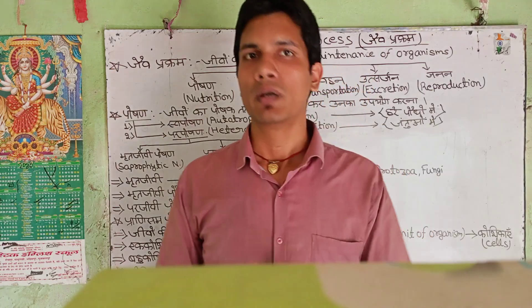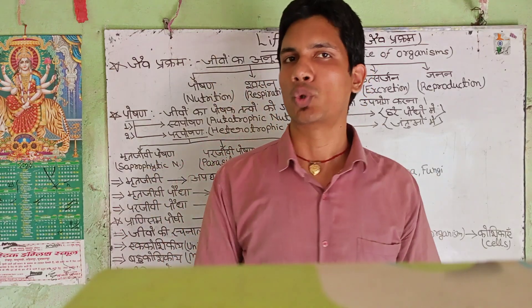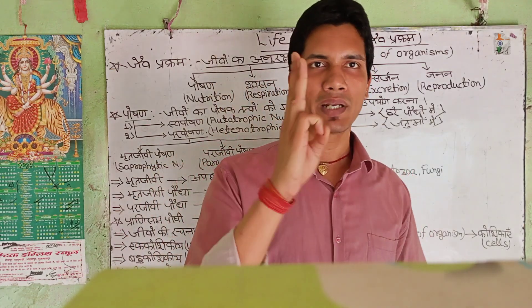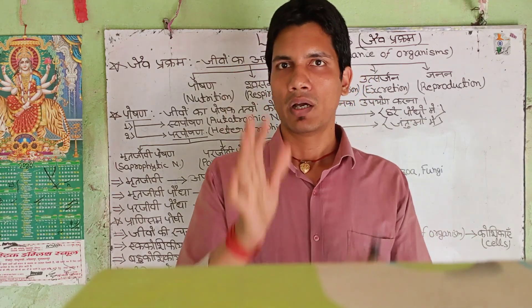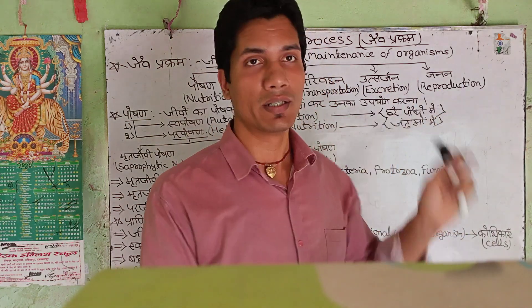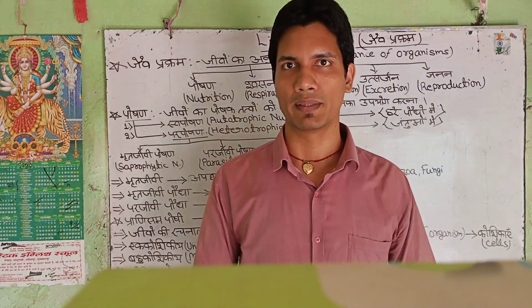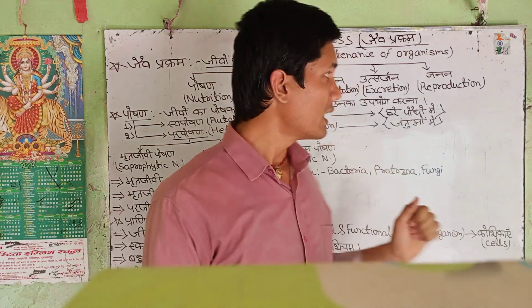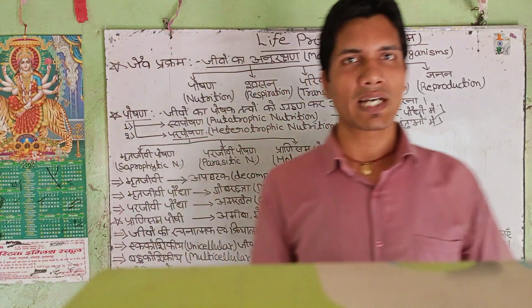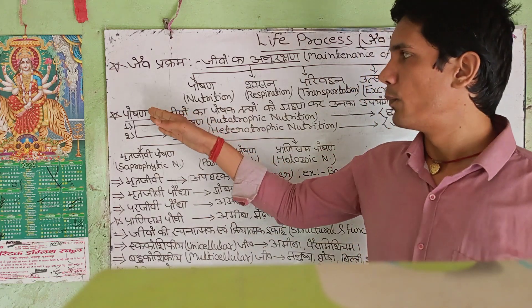The five life processes are: Number one, Poshan (Nutrition). Number two, Shwasan (Respiration). Number three, Parivahan (Transport). Number four, Utsarjan (Excretion). And number five, Janal, which we know as Reproduction.